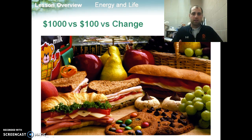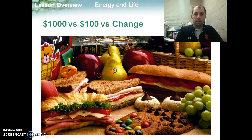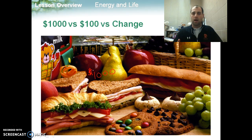So we get our energy from all of this delicious food, and there's lots of energy built up within the bonds of the macromolecules inside of all of this food. But this food is like $1,000 bills that we have stored in the bank. All of these starches and polysaccharides and disaccharides that we find in these foods are like money in the bank — we wouldn't walk around with bunches of $1,000 bills.